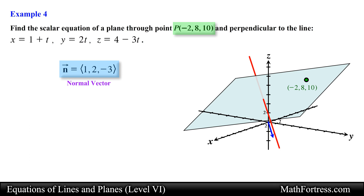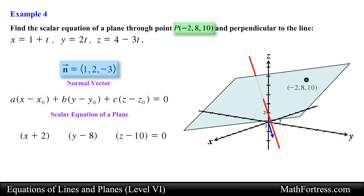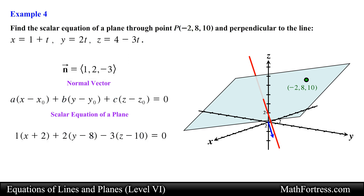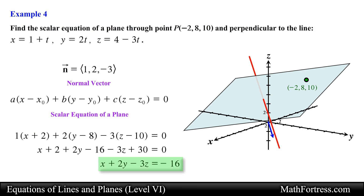Now that we have a point and a normal vector, let's substitute them into the scalar equation of a plane — the coordinates of point P and the components of the normal vector. From here it is just a matter of simplifying and moving the constant to the other side. Doing that we obtain the following scalar equation of the plane, and this is our final answer. In our next video we will go over slightly more challenging examples involving the equation of a plane in space.